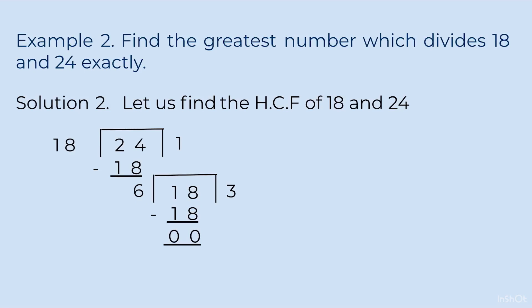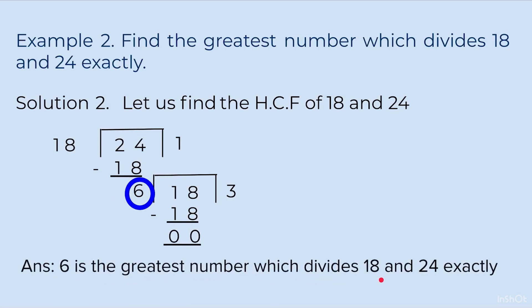Students should know to stop when they get 0 remainder. I've seen children get confused about which number is the HCF — whether it's 3, 6, or 18. You have to remember: at the stage where you get 0 remainder, that divisor is your HCF. Don't get confused with the other numbers written around it. So 6 is the HCF, and 6 is the greatest number which divides 18 and 24 exactly.